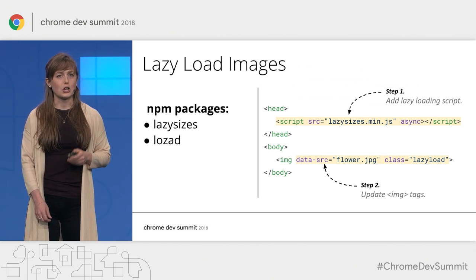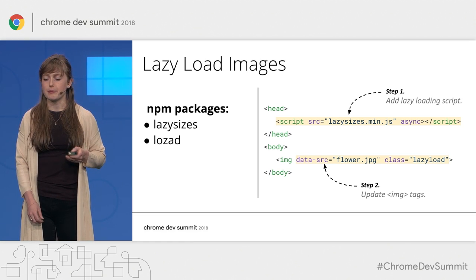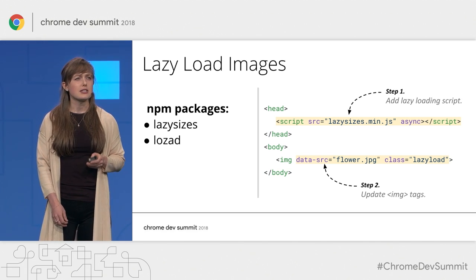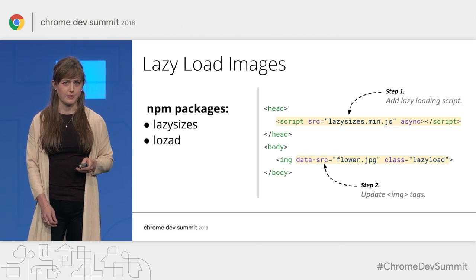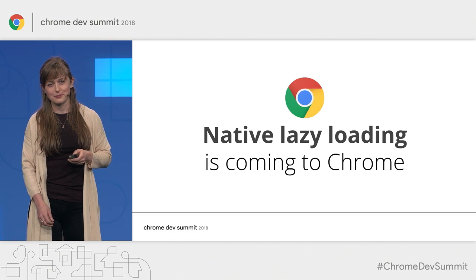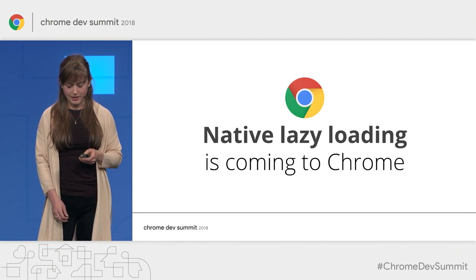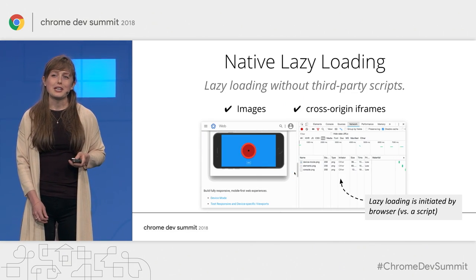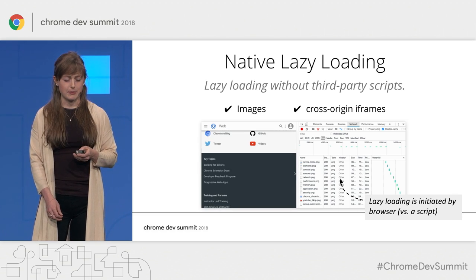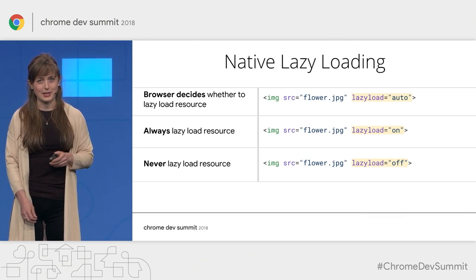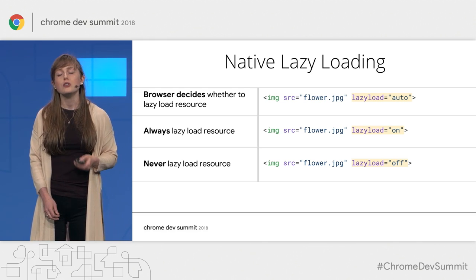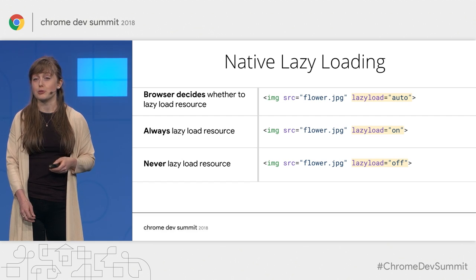Two tools to look into for image lazy loading are lazySizes and Lozad, and you implement them both more or less the same way: add the script to your site and indicate which images should be lazy loaded. Just because this is a fairly simple technique does not mean it's not important — in fact, it is so important that native lazy loading is coming to Chrome. Native lazy loading means you'll be able to take advantage of lazy loading without adding third-party scripts. It will be available for both images and cross-origin iframes. You can use the loading attribute to specify which resources should or should not be lazy loaded.